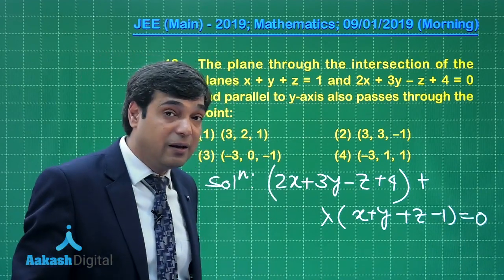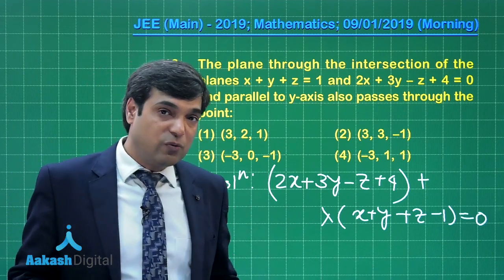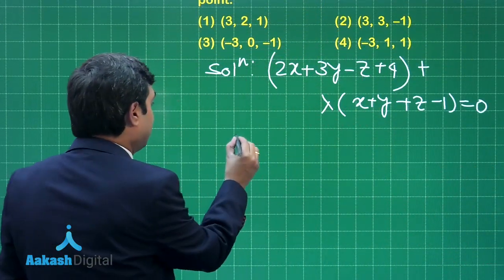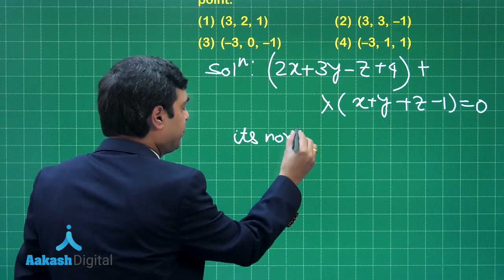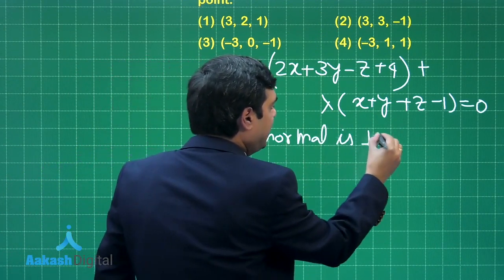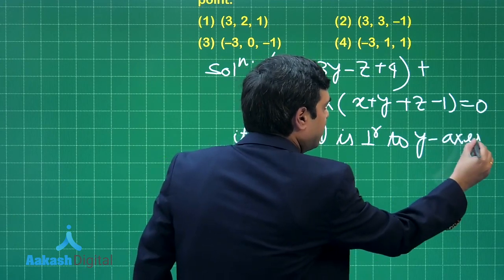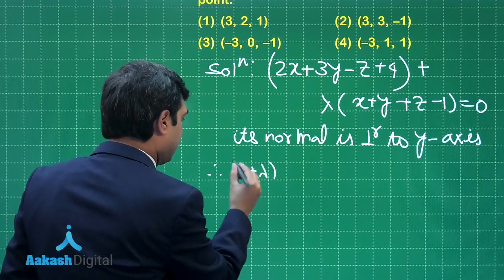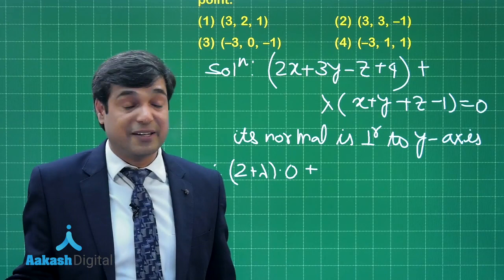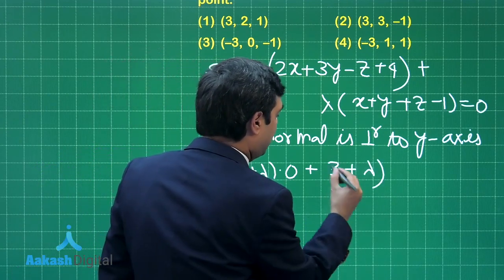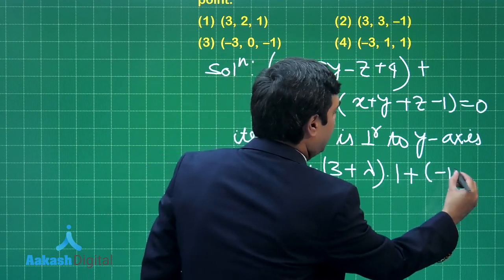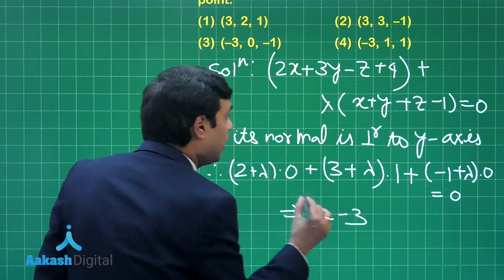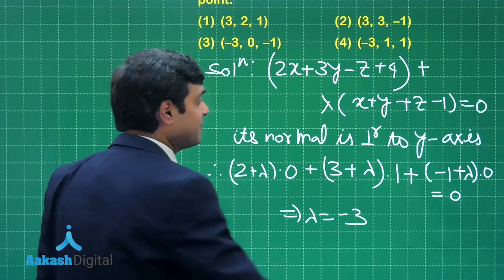This is the required plane. It is parallel to y-axis, meaning its normal is perpendicular to y-axis, so a·j will become 0. The direction ratios of y-axis are (0,1,0). We have (2+λ)×0 + (3+λ)×1 + (-1+λ)×0 = 0, giving me λ = -3. Put the value of λ as -3 and simplify.